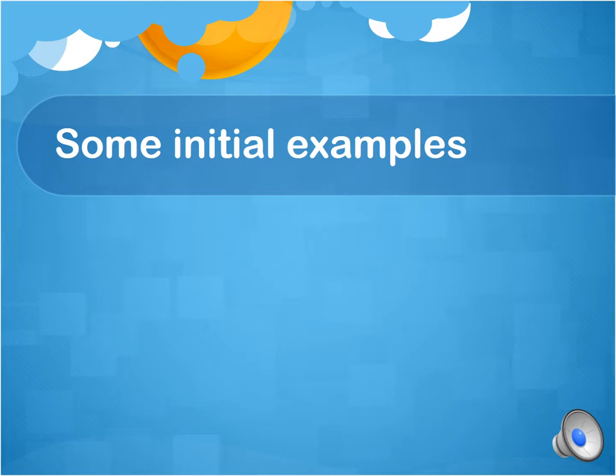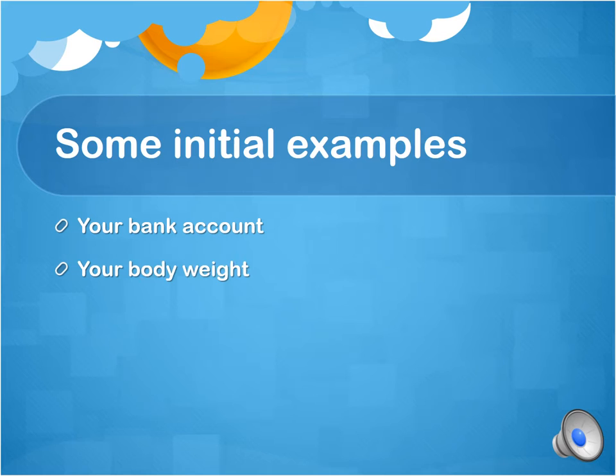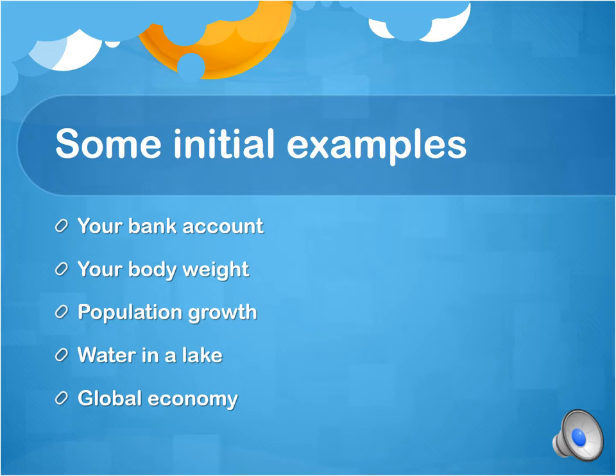Let's shift gears and start an intuitive introduction to system dynamics using some very simple examples. I'll talk about your bank account, your body weight, population growth as a more collective variable, water in a lake, and the global economy. Let's look at your bank account first. The amount of money stored in your bank account is not a static variable — it changes over time because you have inputs of money coming through income or deposits, and you also have outputs such as expenses and investments.